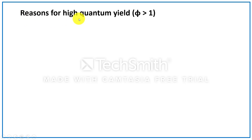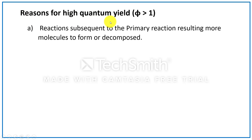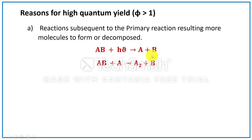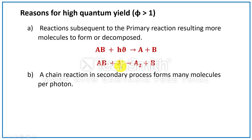Let us see the reasons for high quantum yield. The first reason is that reactions subsequent to the primary reaction result in more molecules being formed or decomposed. Here, one molecule undergoes decomposition to give product, and one of the fragments reacts with another reactant molecule to give product. So more reactant molecules undergo decomposition per photon absorbed, making quantum efficiency high.